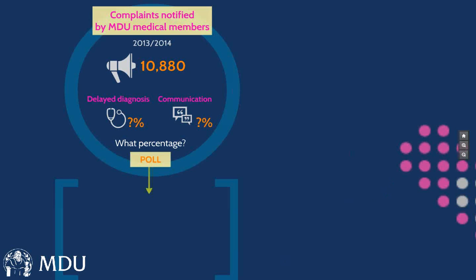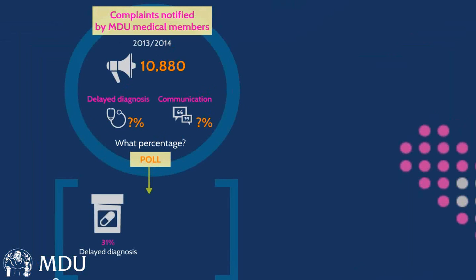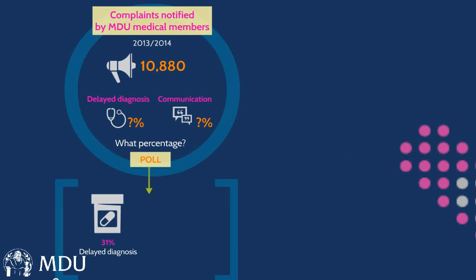Great, thank you very much for that. The majority of people — 42% — got that answer right because in fact it was 31% of our complaints related primarily to a delayed diagnosis. That's unsurprising because a lot of our members are in primary care and general practice. Communication was only the lead issue in 15% of complaints, but it was a secondary or aggravating factor in a significantly larger proportion. So the central message that good communication can avoid complaints is still really right.